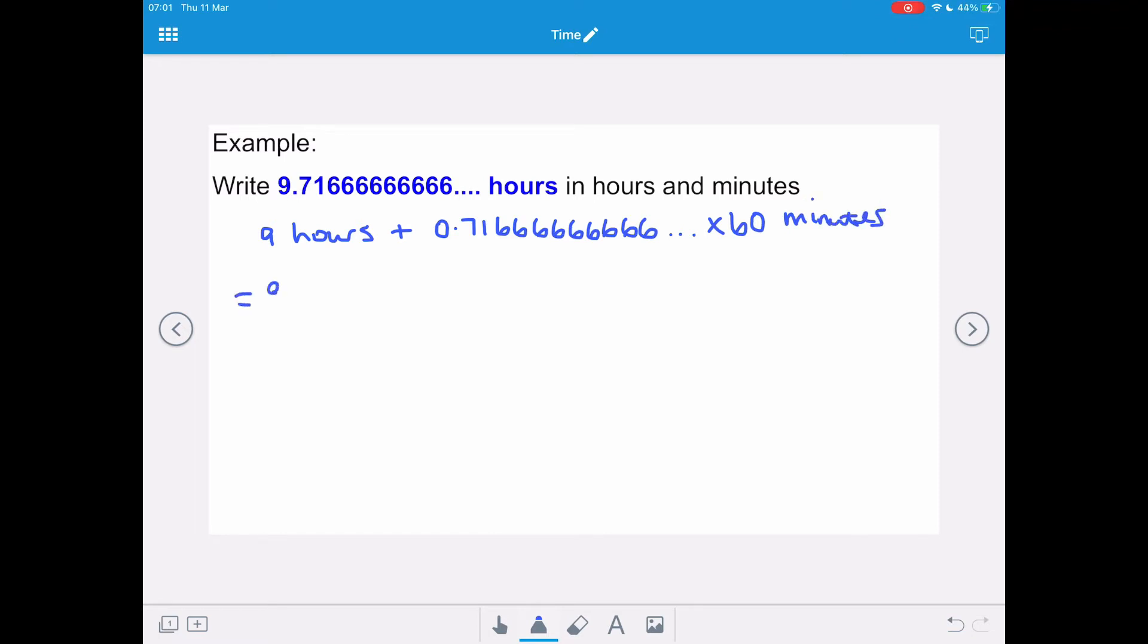So if we put that into our calculator we've got our 9 whole hours and the 0.716 recurring times 60 gives us 43 minutes. And then we just need to rewrite that as 9 hours and 43 minutes.